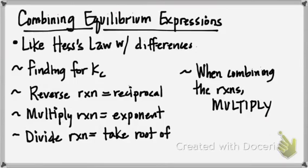Number one, the first one is that you're finding for Kc or your equilibrium constant not for delta H. If you reverse the reaction when you're combining equilibrium expressions what you're going to do with the numbers, you're going to make it a reciprocal. If you multiply the reaction, then you're going to use an exponent. If you divide, you're going to take the root of and then when you finally get all your stuff together, when you combine your reactions, you're going to multiply rather than add. So let's go ahead and get started on some of these practice problems.